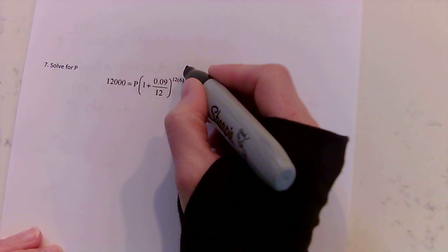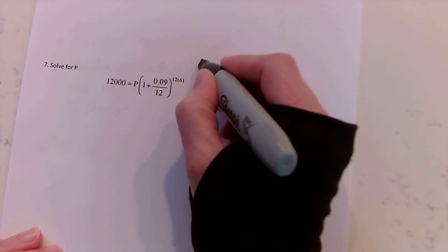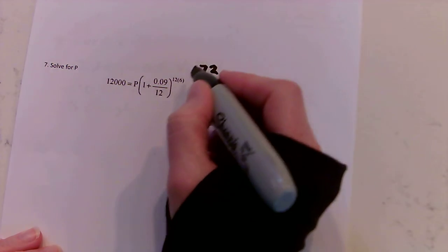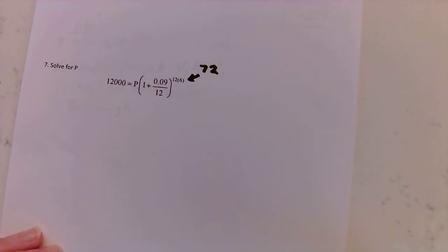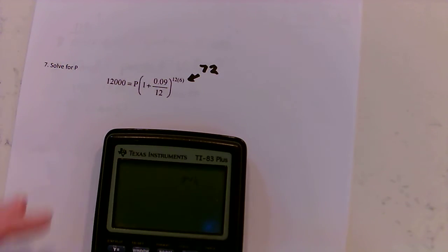So first I'm going to do just to get this out of the way, 12 times 6, and the exponent is 72. So I'm going to use that.